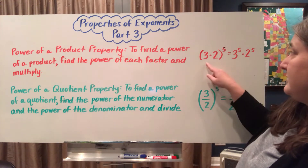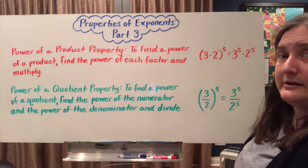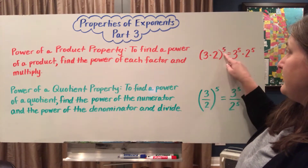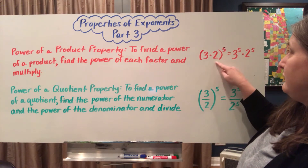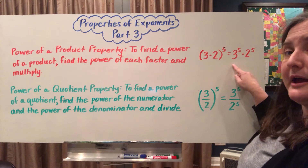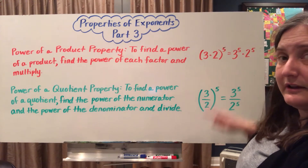So in this case, 3 times 2 to the 5th power can be done by doing 3 to the 5th power and 2 to the 5th power, and multiplying those answers together to get your final answer.